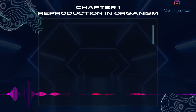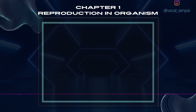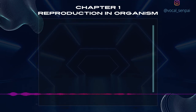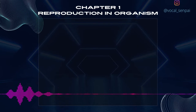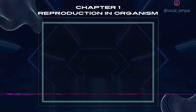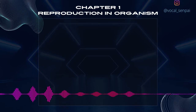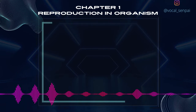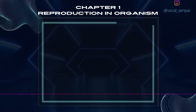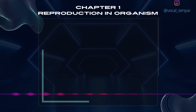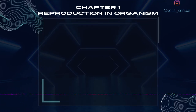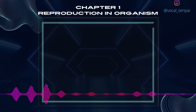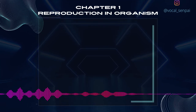Sexual reproduction involves formation of the male and female gametes, either by the same individual or by different individuals of the opposite sex. These gametes fuse to form the zygote, which develops to form the new organism. It is an elaborate, complex and slow process as compared to asexual reproduction. Because of the fusion of male and female gametes, sexual reproduction results in offspring that are not identical to the parents or amongst themselves.